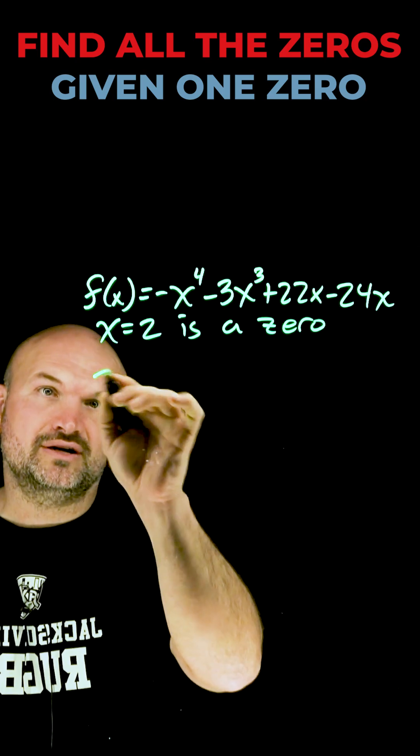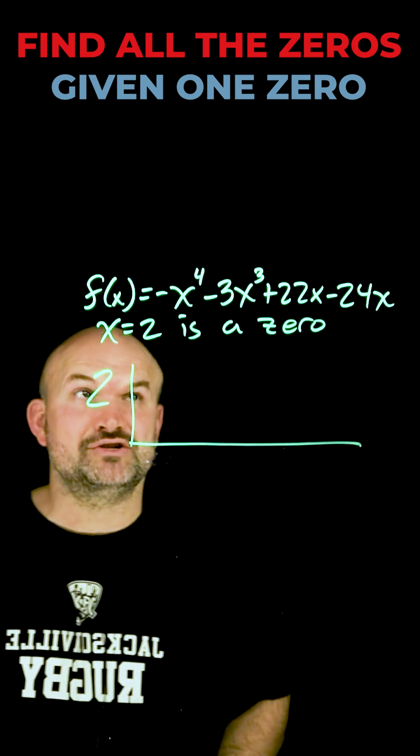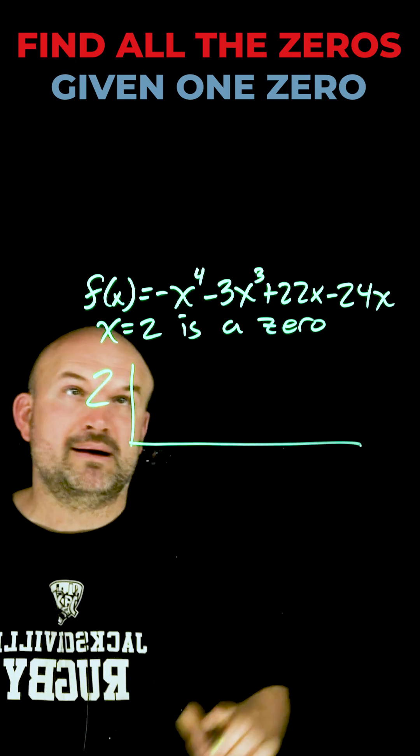So to apply synthetic division here I'm going to take my zero and I'm going to put it outside my synthetic division bar. Then I'm going to take the coefficients of my polynomial.